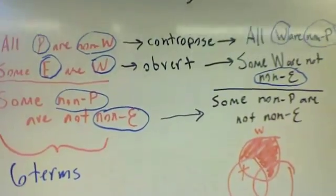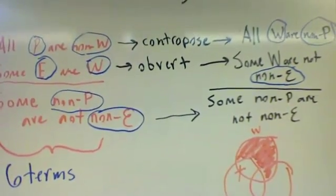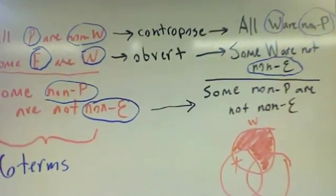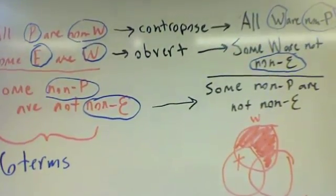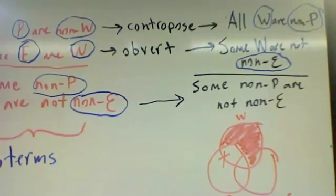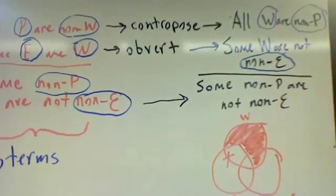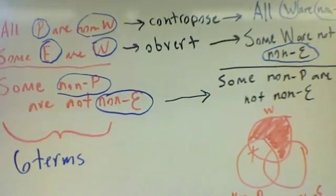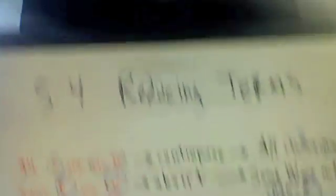If we test this for validity, we'd flip the two premises around where the first premise becomes some W are not non-E, because non-E is the major term — remember, the major term should always be on top. You can see I've done a Venn diagram to show that it's valid: if all W's are non-P's and some W are not non-E's, you can conclude that some of the non-P's are not non-E's. If you look in your book on page 272, you can see all this material covered there.